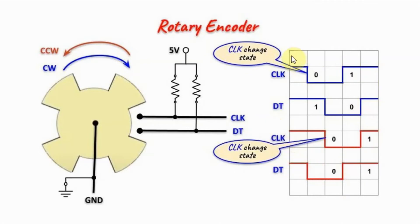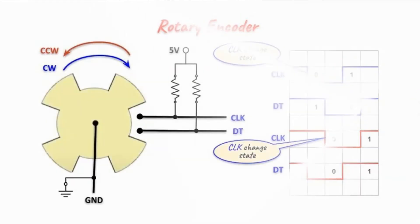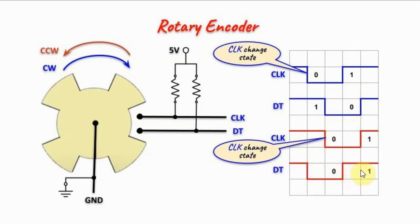By looking at the timing diagrams, we can see that there is a pattern between the clock and data values. In the clockwise timing diagram, at every instant where the clock changes state, the value of the clock differs from the value of the data line. On the other hand, in the counter-clockwise timing diagram, every time the clock changes state, the values of the clock and data line are the same.